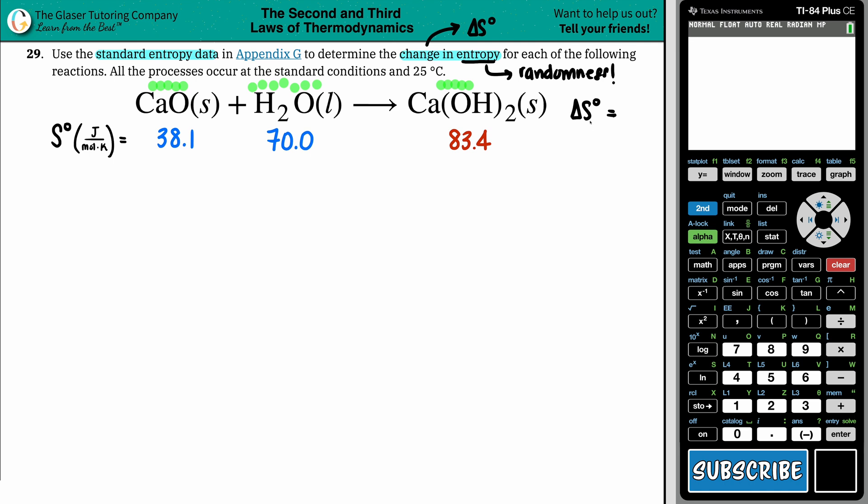The way that we show that in terms of a change in entropy is a negative. If you were gaining randomness, that's a positive. But in this case, we're going to guesstimate that it's going to be a negative. Let's see if that's the case.